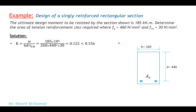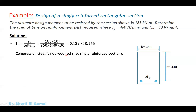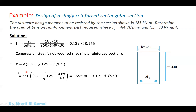Step one: calculate k equals M ultimate divided by Fcubd squared. M ultimate is 185 kilonewton meters, converted by multiplying by 10 to the power 6, divided by b equal to 160, Fcubd equal to 30, and d squared equal to 440 squared. This gives k equal to 0.122, which is less than k dash equal to 0.156. Therefore, compression steel is not required — it is a singly reinforced rectangular section. Proceed to step two.